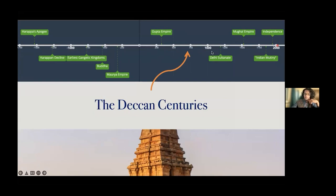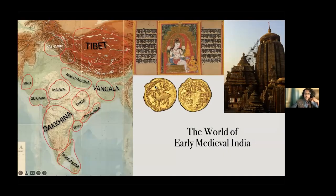This is called the early medieval period and it's a really fascinating time because it's when you really begin to see the various regions of the Indian subcontinent interacting at unprecedented ranges and depths. It is of course a time when the Deccan really dominates the Indian subcontinent. Over the next hour I'm going to be talking through the history of the Deccan, the dynasties that dominated, and how they justified their power through war, violence, art, architecture and literature. Welcome to the world of early medieval India from 600 to 1200.